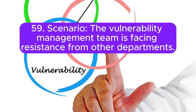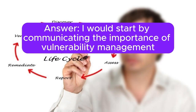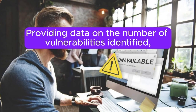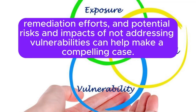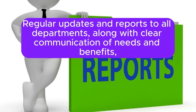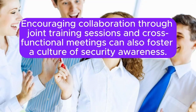Scenario 59: The vulnerability management team is facing resistance from other departments. How do you foster collaboration? I would start by communicating the importance of vulnerability management and its impact on the organization's overall security posture. Providing data on the number of vulnerabilities identified, remediation efforts, and potential risks of not addressing vulnerabilities can help make a compelling case. Highlighting success stories and industry best practices can also demonstrate the value of the program. Regular updates and reports to all departments, along with clear communication of needs and benefits, would help gain their support. Encouraging collaboration through joint training sessions and cross-functional meetings can also foster a culture of security awareness.